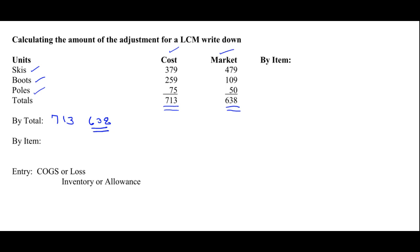You could also do this adjustment by item. The cost of our first item is $379, the market is $479, so the lower is $379 and we'll use that. For our second item, cost is $259 and market is $109, so we'll use $109. On our third item, cost is $75 and market is $50, so we'll use $50. If you sum up the total of these three items, doing our by-item analysis, the adjustment comes to $538.